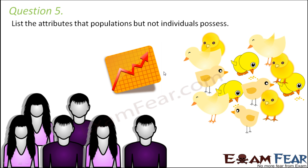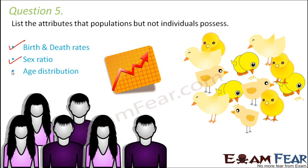Question number 5: List the attributes that populations but not individuals possess. Some attributes are: birth rate and death rate — for individuals we speak of birth and death, but for populations we speak of rates. Sex ratio — for an individual we talk about sex, but for a population we talk about the percentage of males or females. Age distribution — an individual has a specific age, but a population has a distribution of ages across groups. Finally, population density — how many individuals are present per unit area or volume — applies only to populations, not individuals.